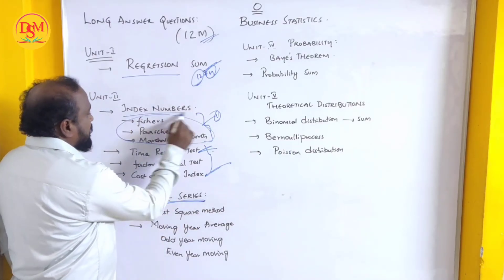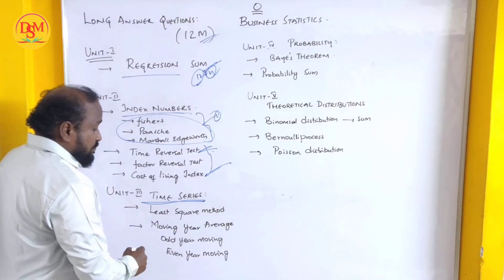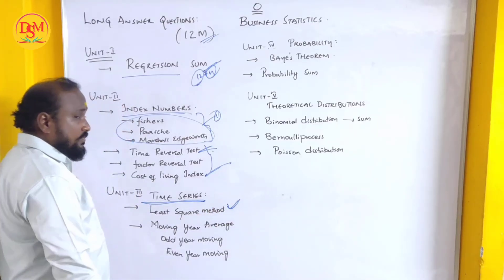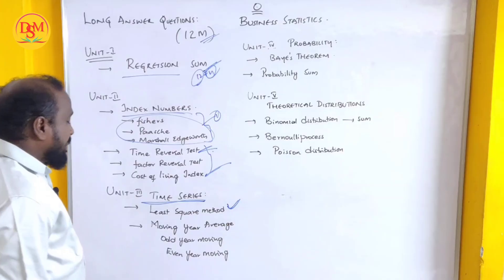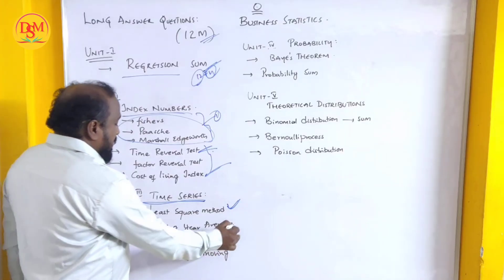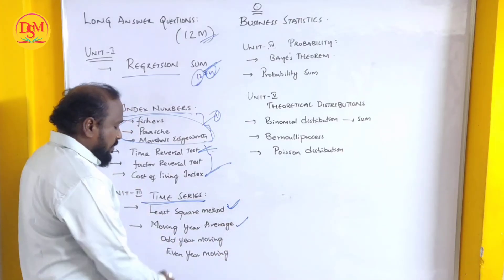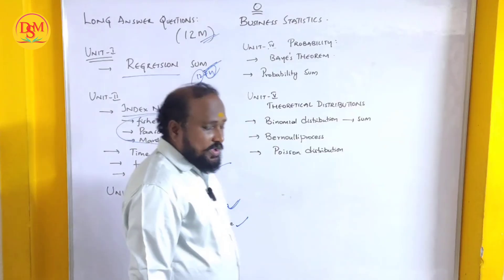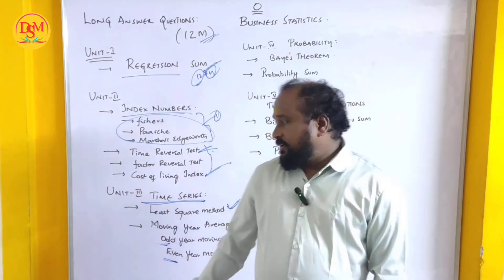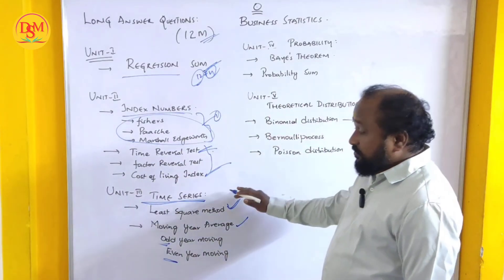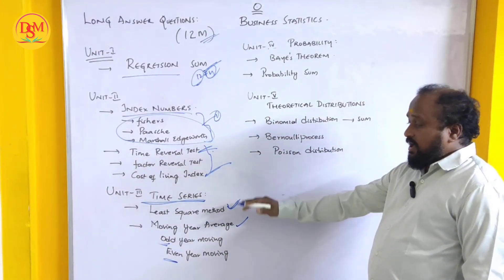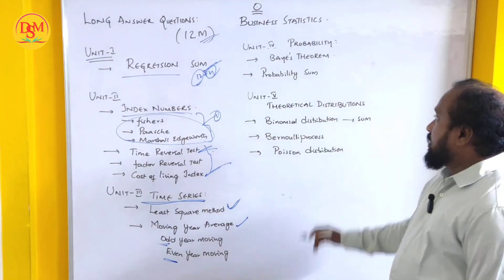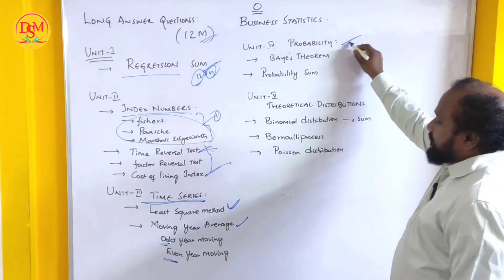Unit number 3 is Time Series. The Least Square Method is one very important question in this chapter, and also Moving Average — even year moving and odd year moving. Unit number 4 is Probability. I'll make a video on this, so keep watching.